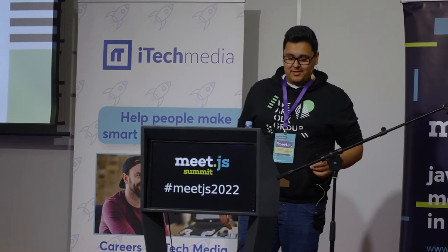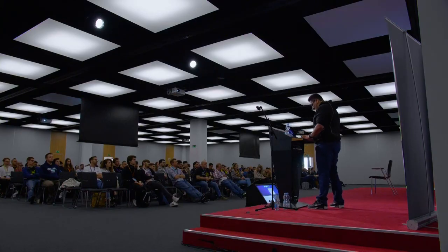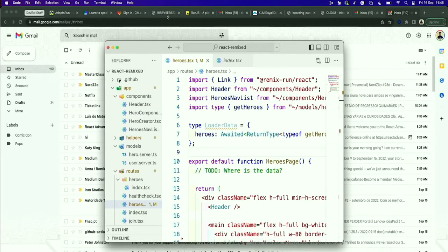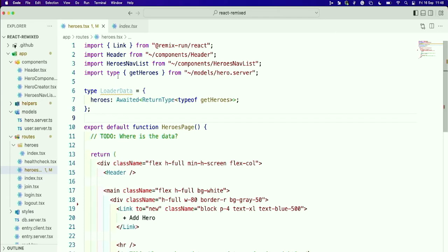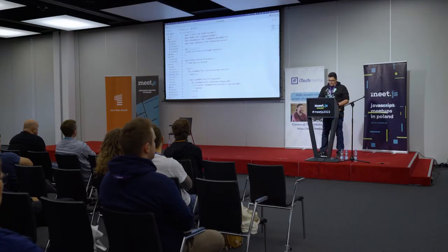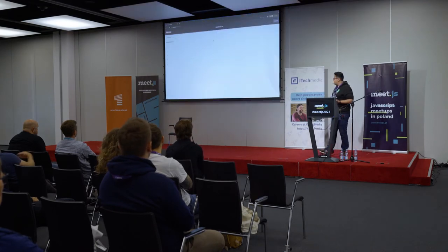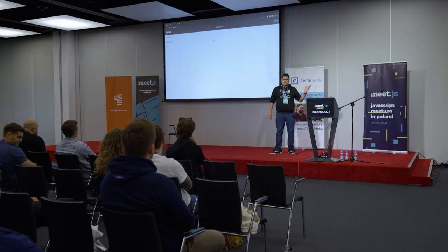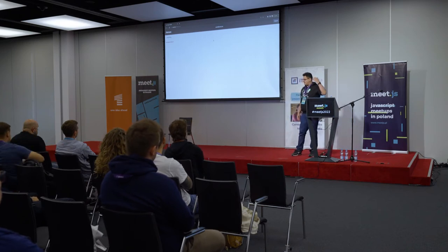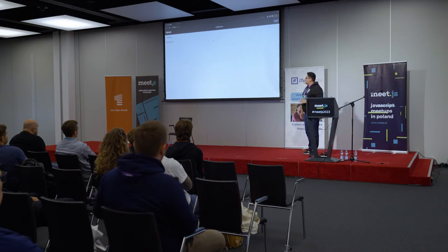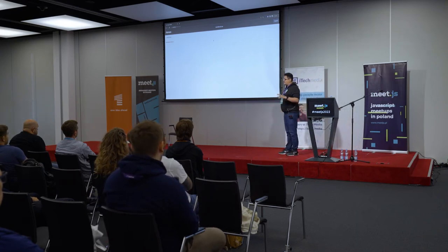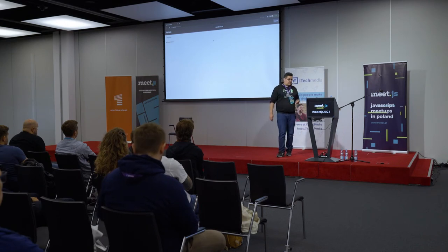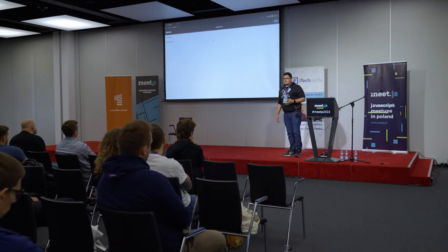I'm going to try to do a live demo — let's hope everything works. We're going to see an application built on top of a Remix stack. It's based on a comic book concept from Mark Waid's Justice League 'Tower of Babel' from the early 2000s, where Batman had a list of weaknesses for all members of the Justice League. This is pretty much what we're going to be building.